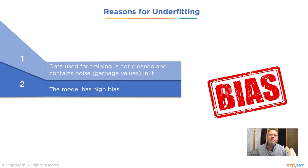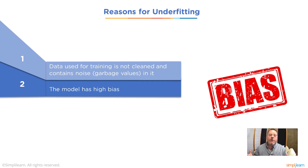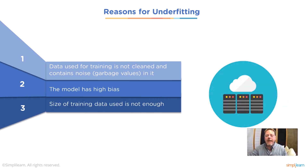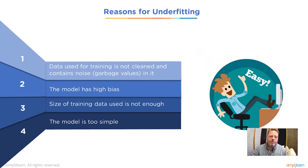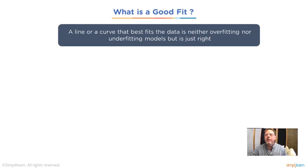Data used for training is not cleaned and contains noise and garbage values — again, underfitting and overfitting share the same issue: you have to clean your data. The model has a high bias — we've seen this in things like self-driving cars and facial identification. If you have five people from India, ten from Africa, and twenty from the US, you've created a bias because it's over-representing the larger group. The size of training data used is not enough, and the model is too simple — just one straight line through all the data when it needs a slight shift.